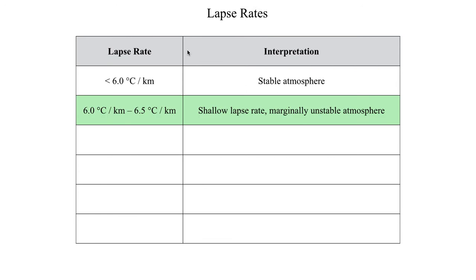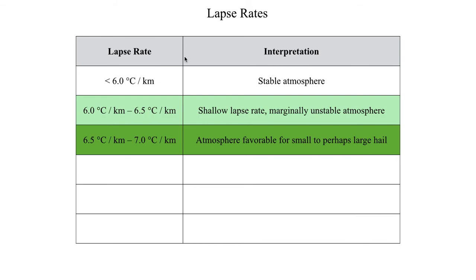Values between about 6 and 6.5 degrees C per kilometer represent a pretty shallow lapse rate, but you might have an unstable atmosphere. You may not get severe thunderstorms, but you might get stronger thunderstorms producing some stronger hail — maybe half-inch or penny-sized hail, and some gusty outflow winds. Around 6.5 to 7 degrees C per kilometer is when you start becoming a little more worried about hail, as lapse rates in that range might support strong enough updrafts for a more significant hail threat, though it's still on the lower end.